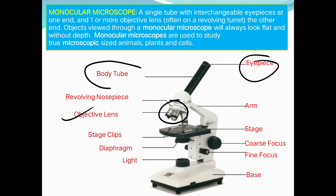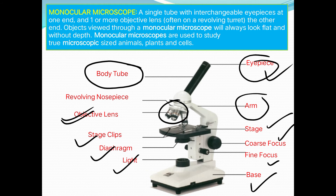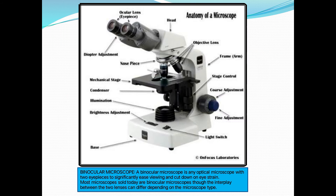The parts of the monocular microscope are: body tube, eyepiece, eye lens, objective lens, stage clips to hold the microscopic slide, diaphragm through which light is focused, base, fine focus, coarse focus, stage, and arm. The fine and coarse focus controls are used to clarify the image.